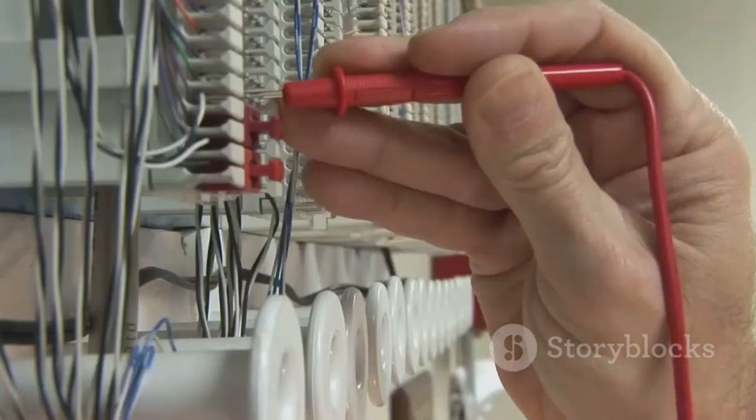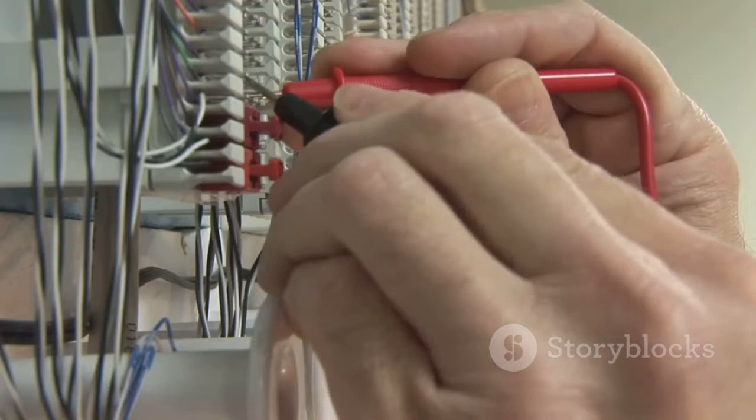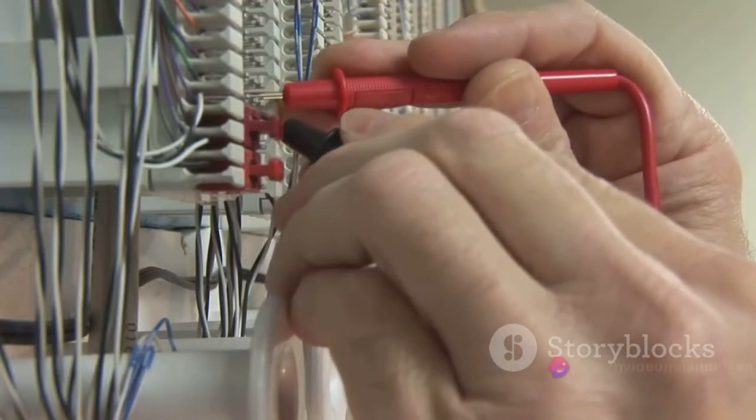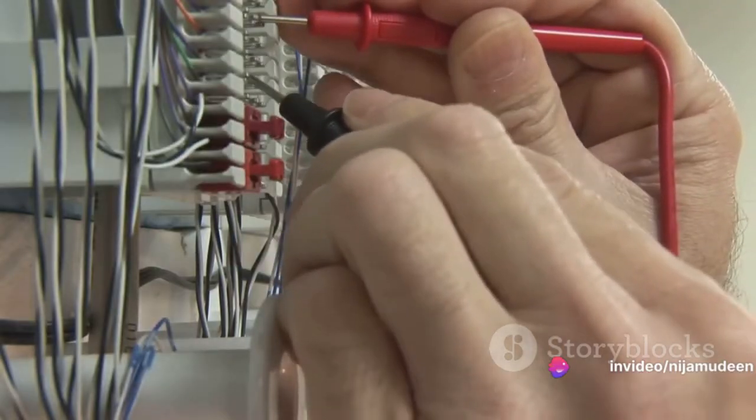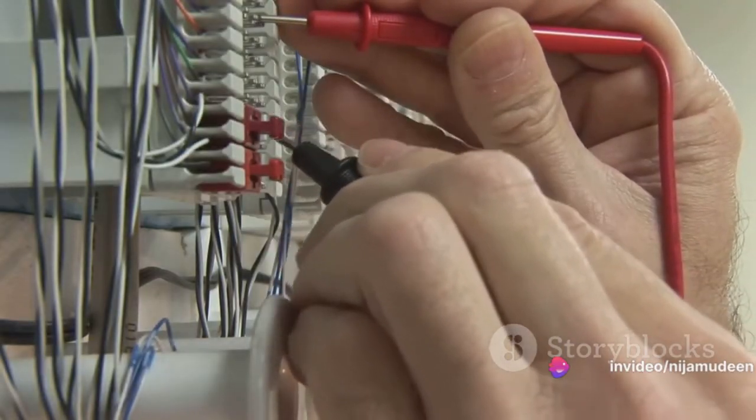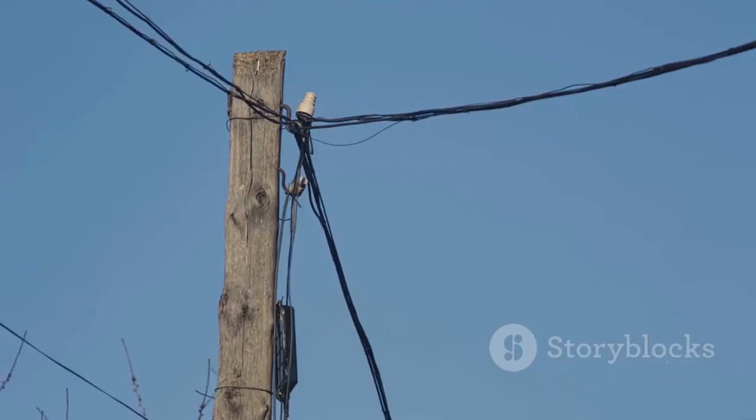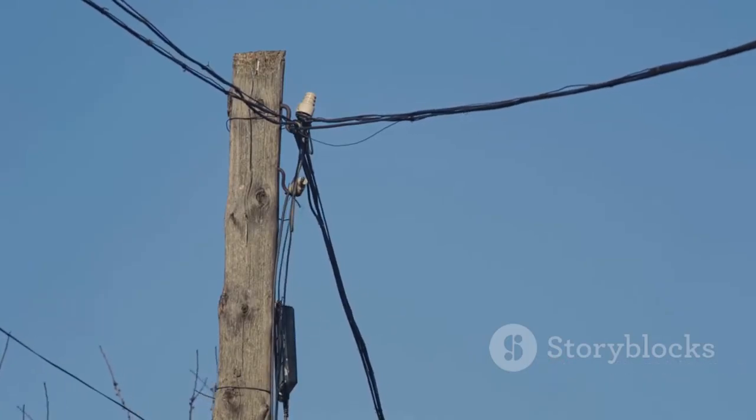When we talk about a four-wire RTD, we're referring to a configuration where two wires are connected to one end of the RTD, and the other two are connected to the other end. It's like having two pairs of wires. This setup allows for a separate current path and a separate voltage measurement path, effectively eliminating the effect of lead wire resistance.